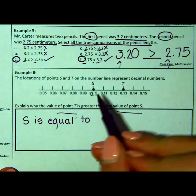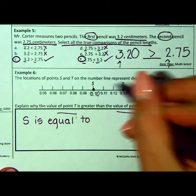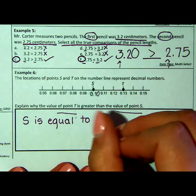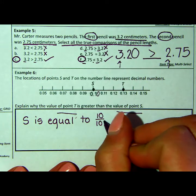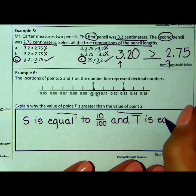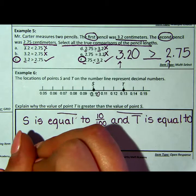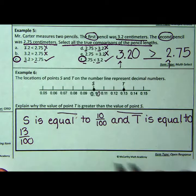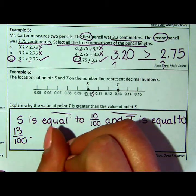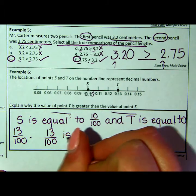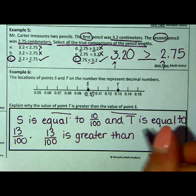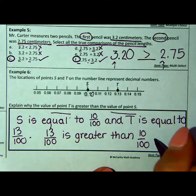But I know, because we've said it now a million times, that if I were to imagine that zero there, now I have hundredths, it's ten hundredths. S is equal to 10/100, and T is equal to 13/100. Now, I guess this is a way I could compare them using the fractions. 13/100 is greater than 10/100. So that's one way that you can explain.